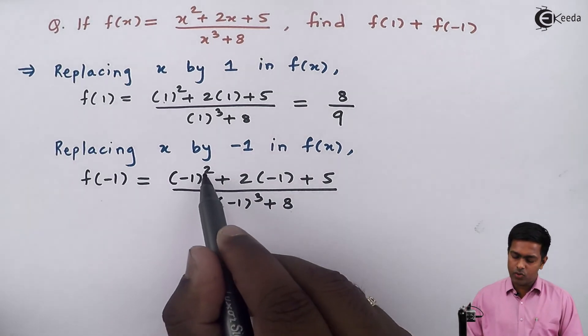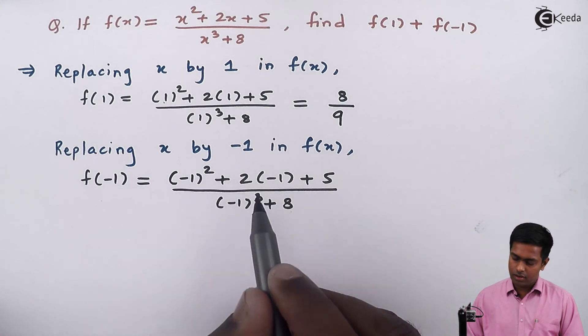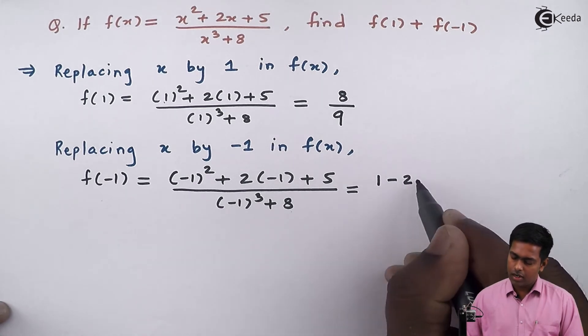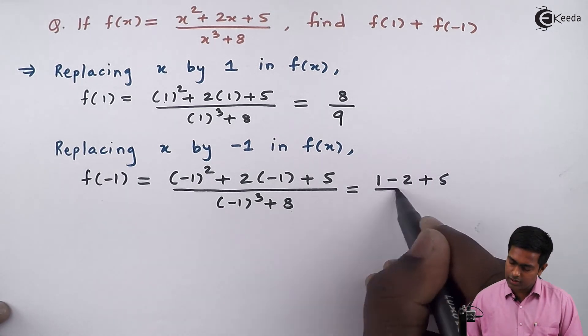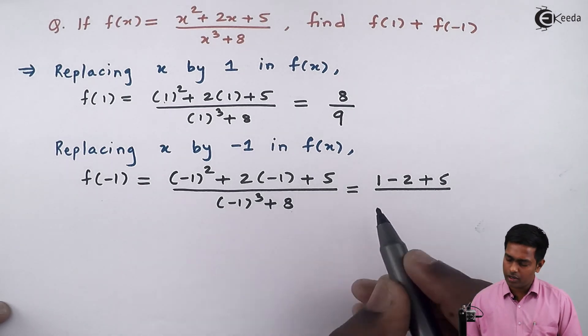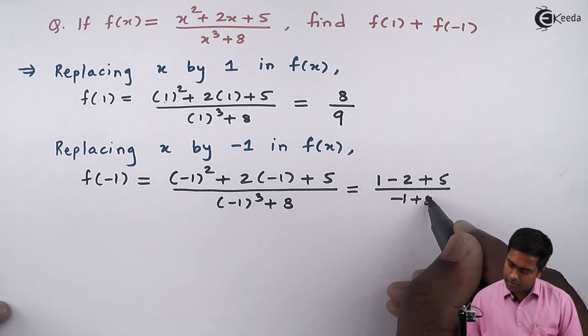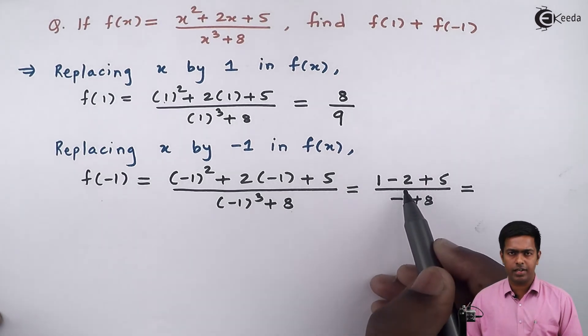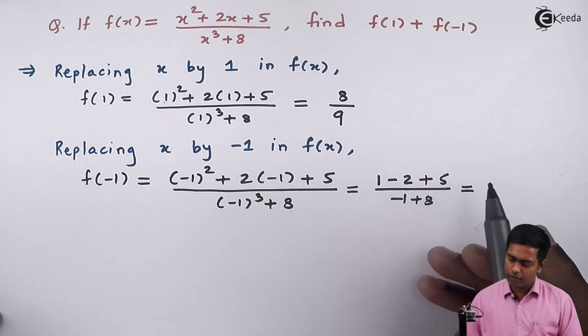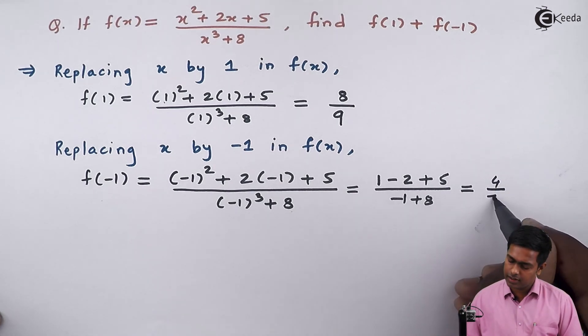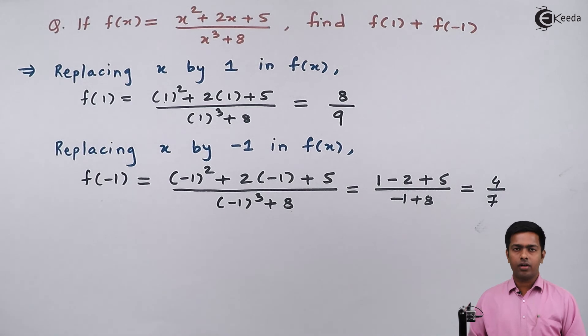Now, (-1)² is 1, 2(-1) is -2, plus 5, upon (-1)³ which is -1, plus 8. This gives us (1 - 2 + 5)/(-1 + 8) = 4/7. So we got the values for f(1) and f(-1).